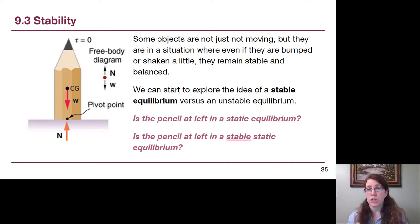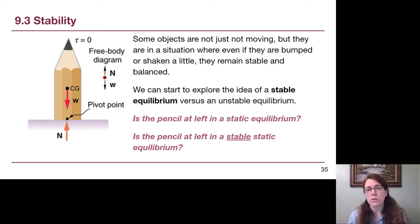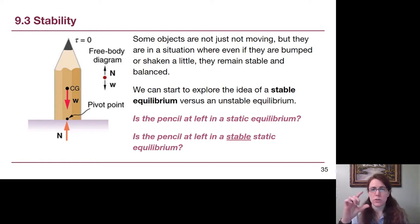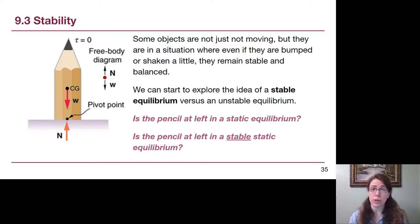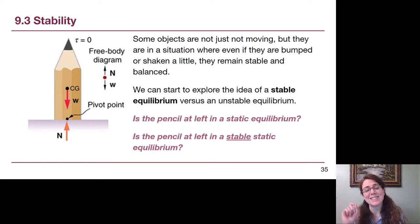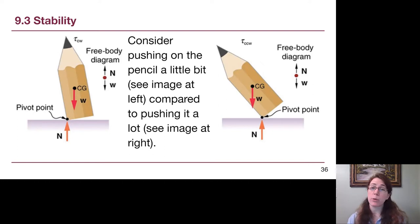Sometimes when we have objects that aren't moving, they can be pushed a little bit and they're still stable, or they can be pushed a little bit and then they fall right over. This tells us whether they are in a stable equilibrium. For example, with this short pencil, we want to think about whether it is in a static equilibrium — is it stationary and not rotating? The answer is yes.